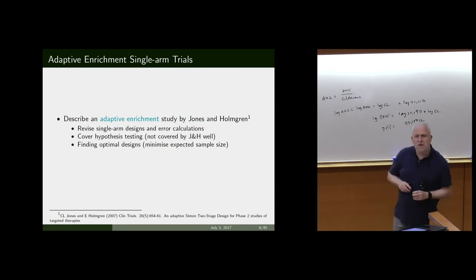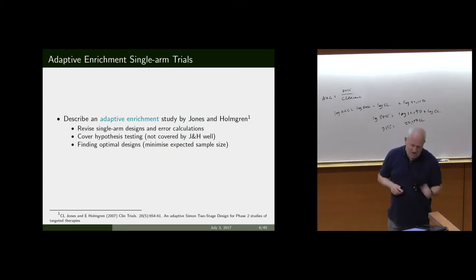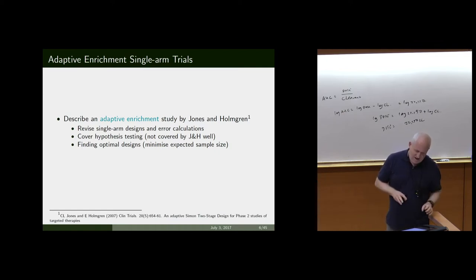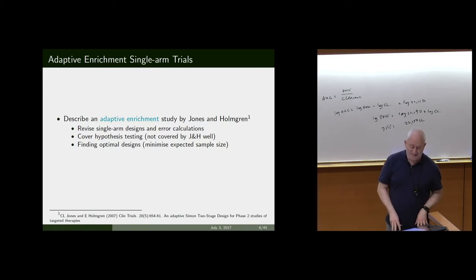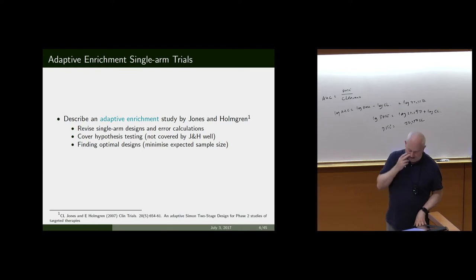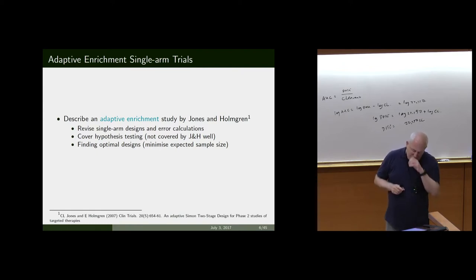The first half of my talk is about single-arm trials. I'm not a mad advocate for them, but as adaptive trials go, the Simon two-stage design is the most used. People do ask about single-arm trials and they're not going away. I'm going to look at an adaptive enrichment study design given by Jones and Holgram in Clinical Trials.